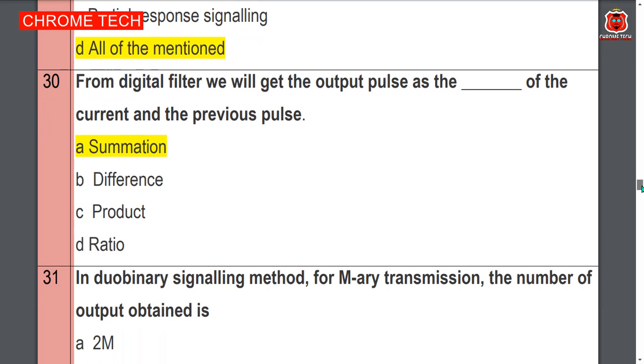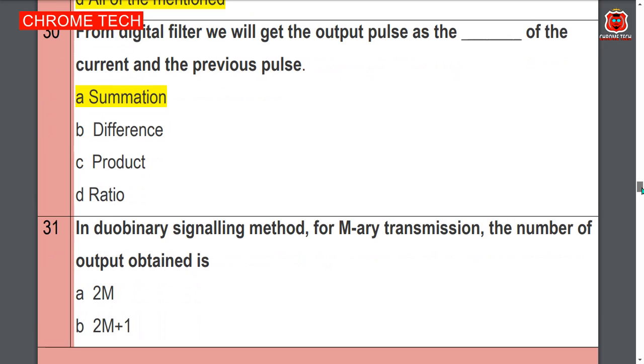From a digital filter we will get the output pulse at the — summation of the current and previous pulse — option A is the correct answer.